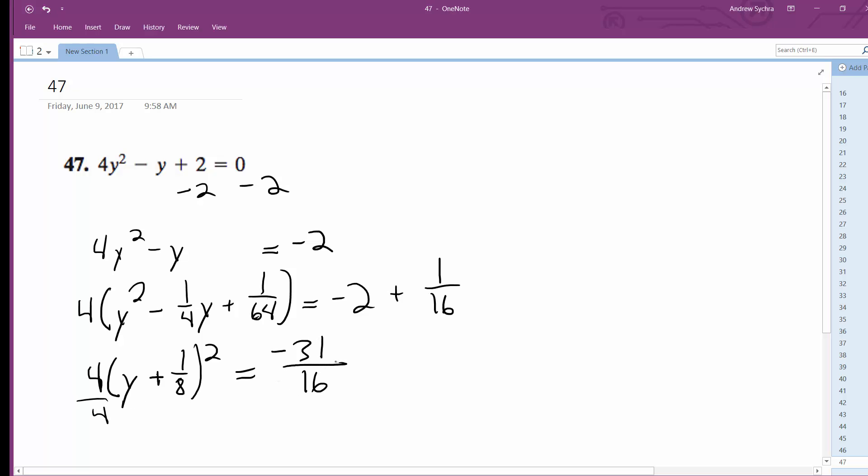Divide by 4. This becomes y plus 1 over 8 squared is equal to negative 31 over 64.